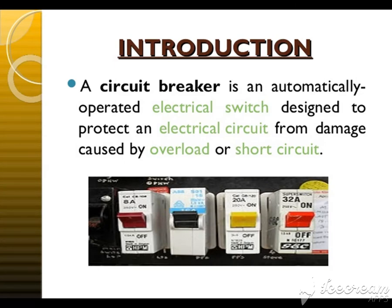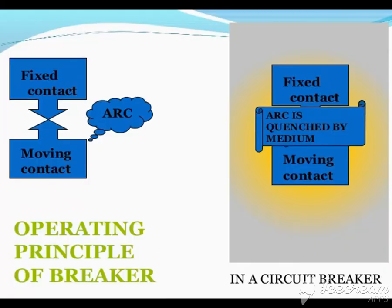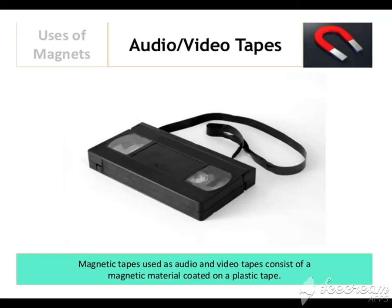We talk about the circuit breaker in your textbook. A circuit breaker is a device used for safety purposes — whenever the current gets too high in our electricity supply, it stops working. There are two types of circuit breakers: fixed contact and moving contact.